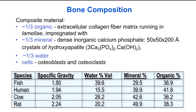Different species have different fractions of water, mineral, and organic content. For example, fish have a higher fraction of water and a lower fraction of mineral content, giving rise to a lower specific gravity. In contrast, human bone has a lower water fraction and a higher mineral fraction. Cow bone is even higher, and rat bone is actually nearly 50% mineral content, corresponding to differences in density and mechanical properties between species.